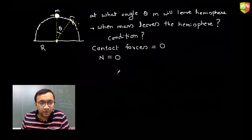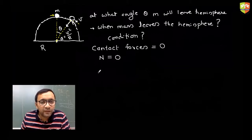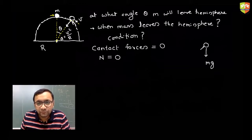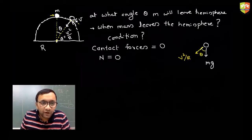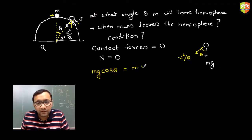Suppose it has a velocity v at that moment. Since it is moving in a circle before leaving the hemisphere, it will have a centripetal acceleration of v²/r towards the center. If you draw the free body diagram of this mass, you will have mg acting downward, and this angle will also be theta. So the force along the direction of the radius is mg cosθ.